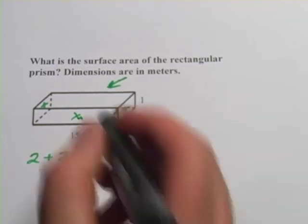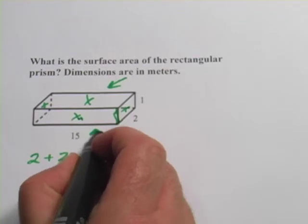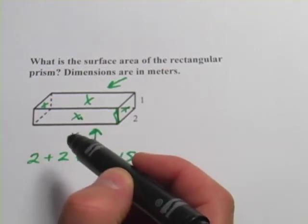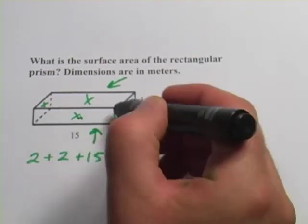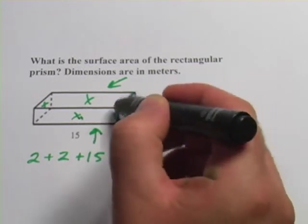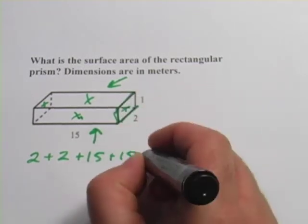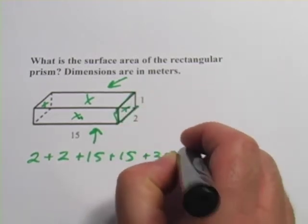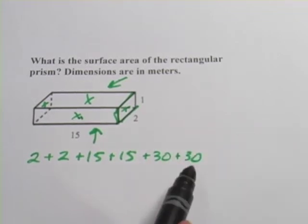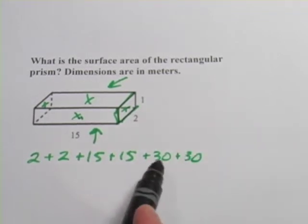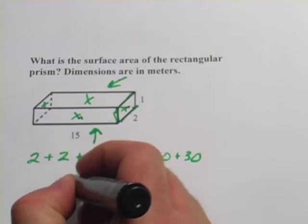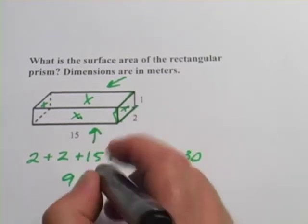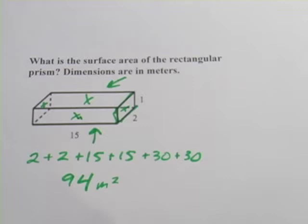Now there are two more sides, and that would be the top and then the bottom that we're not seeing. The top is 15 long, and it's 2 wide. So 15 times 2 is 30. So that's 30 plus 30. And then you just have to add all those together. 30, 60, 90. It looks like 94. And our units are meters, and that's meters squared because this is area.